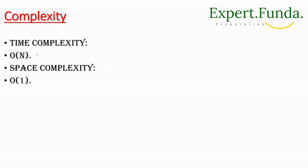For time complexity: we use a single for loop going from index 0 to n, so each index is visited once. All four variables are updated in that single pass, so time complexity is O(n). We are not using any extra space, so space complexity is O(1). Thank you — please like, comment, and subscribe for more upcoming videos!